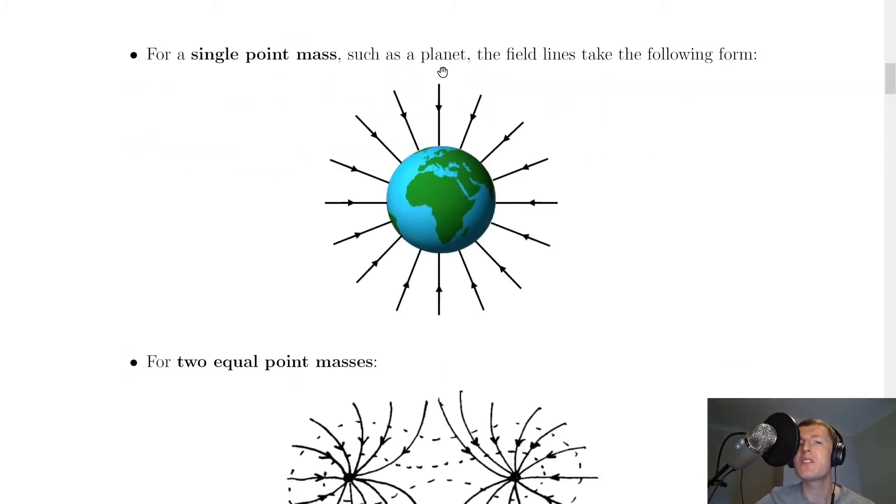For a single point mass, such as a planet, the field lines will take the following form. So they'll look something like this, where you've got the field lines coming in towards the planet. Notice the similarity here to a negative single point charge, which would have the field lines in a circular radial pattern going inward. So in this case, they're going in towards the mass, the planet. The closer you get to the centre of that planet, the larger the gravitational force, and the further away you get, the more spread out the field lines are, the smaller the gravitational force.